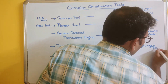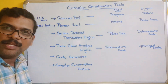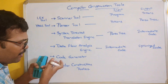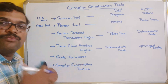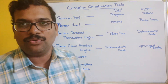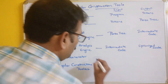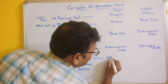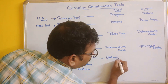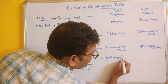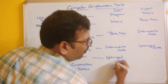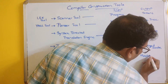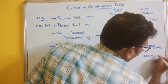Once the code has been optimized, it is given to the code generator, which will generate the machine code. So the input for the code generator is the optimized code, and the output will be the machine code.